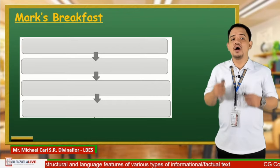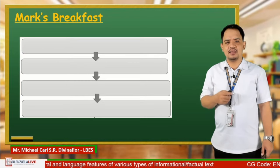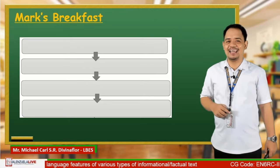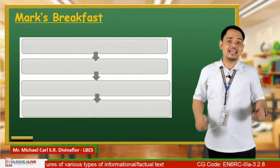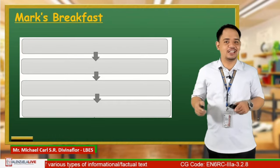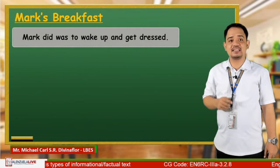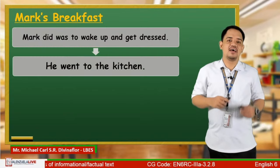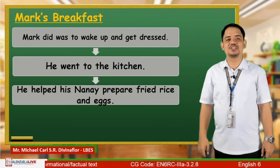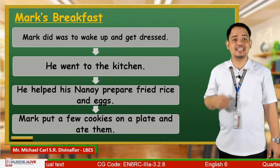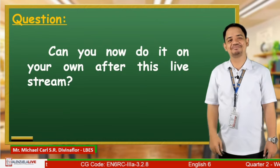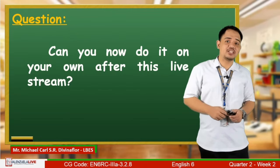Aside from the four rectangles, we also have these arrows that show movement or sequence. They tell us that there is a starting point, a direction, and an ending. Based on the direction of the arrows, we should start with the first shape on the top going down. That is the sequence. So let's put our key events into each rectangular shape: first, Mark waking up and getting dressed; next, Mark went to the kitchen; then, Mark helped his nanay prepare fried rice and eggs; and lastly, Mark put a few cookies on a plate and ate them. That is how it is done. It's easy!